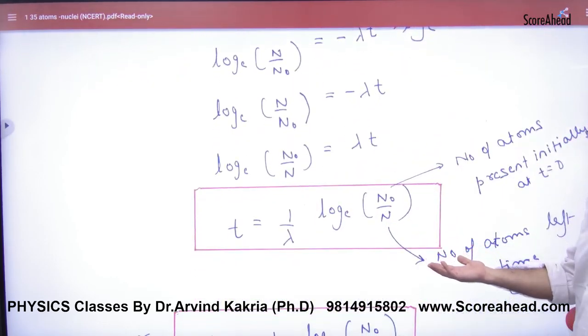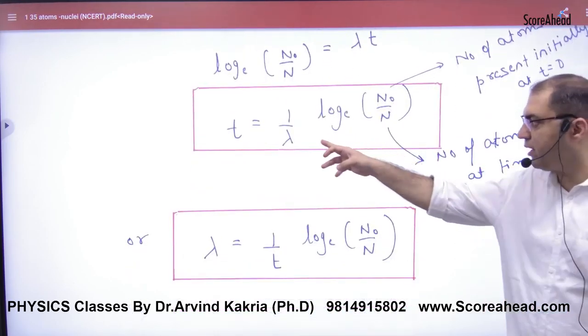We solved this equation. In this equation, N0 is the initial number of atoms and N is the number of atoms left. And here lambda.